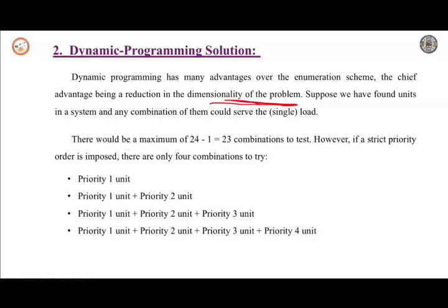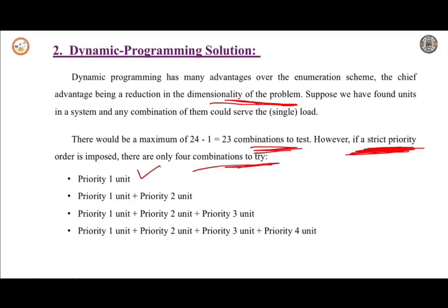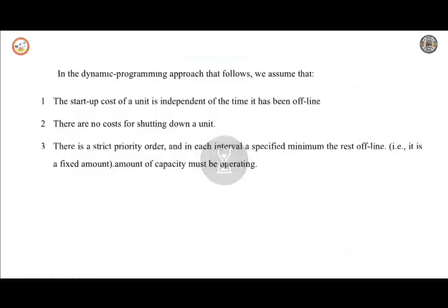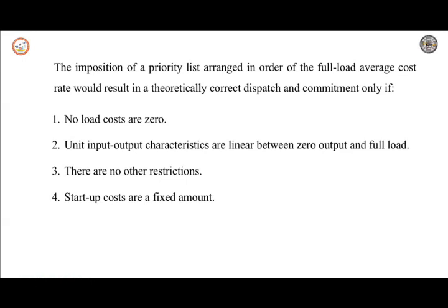We can carry out the number of combinations which are the best units to use to supply the load at a particular hour. In this case there will be a maximum of 2³ combinations to test. However, if you follow the priority order strictly, then there will be only four combinations to try. The first is priority one unit, next is priority one plus priority two unit, and so on following priority orders.